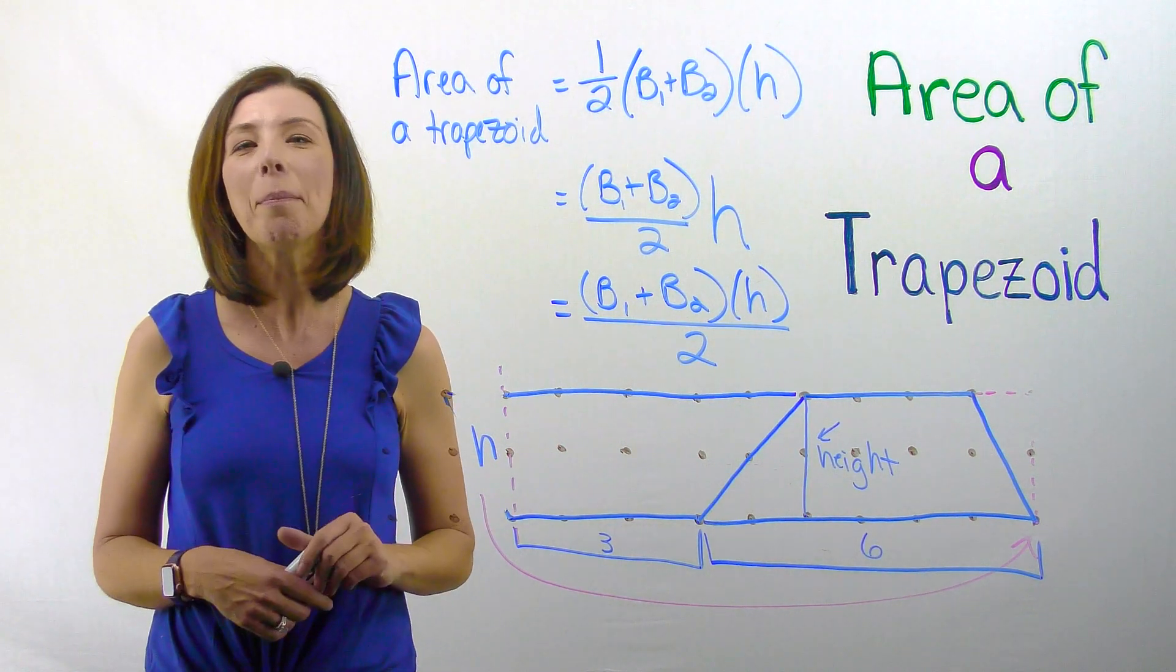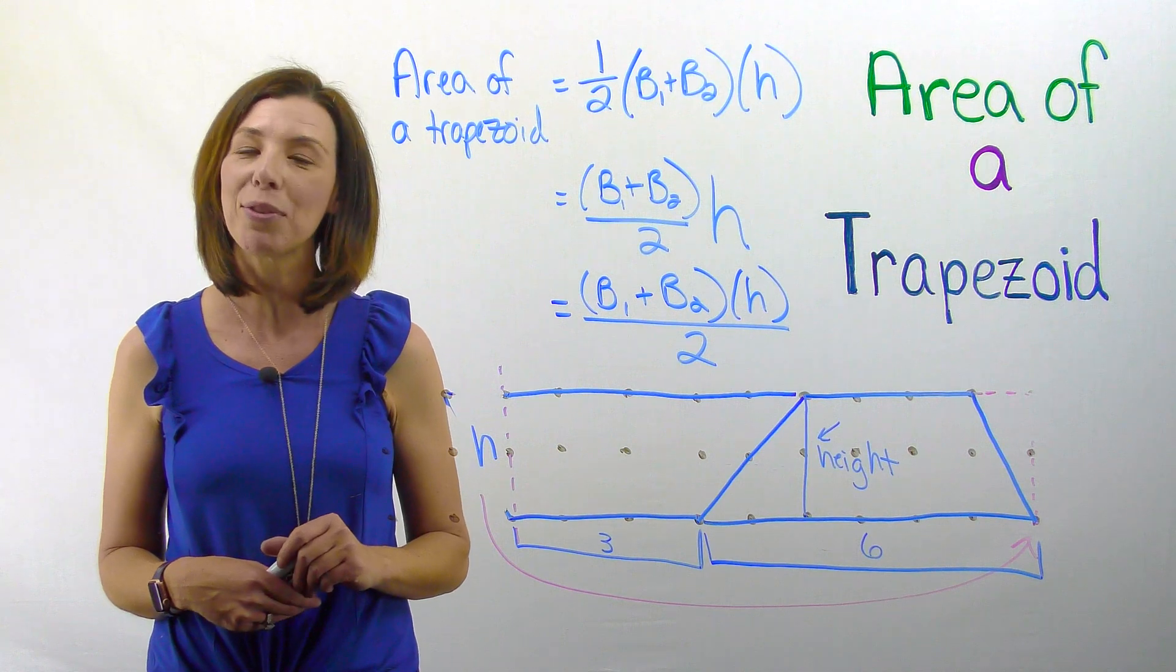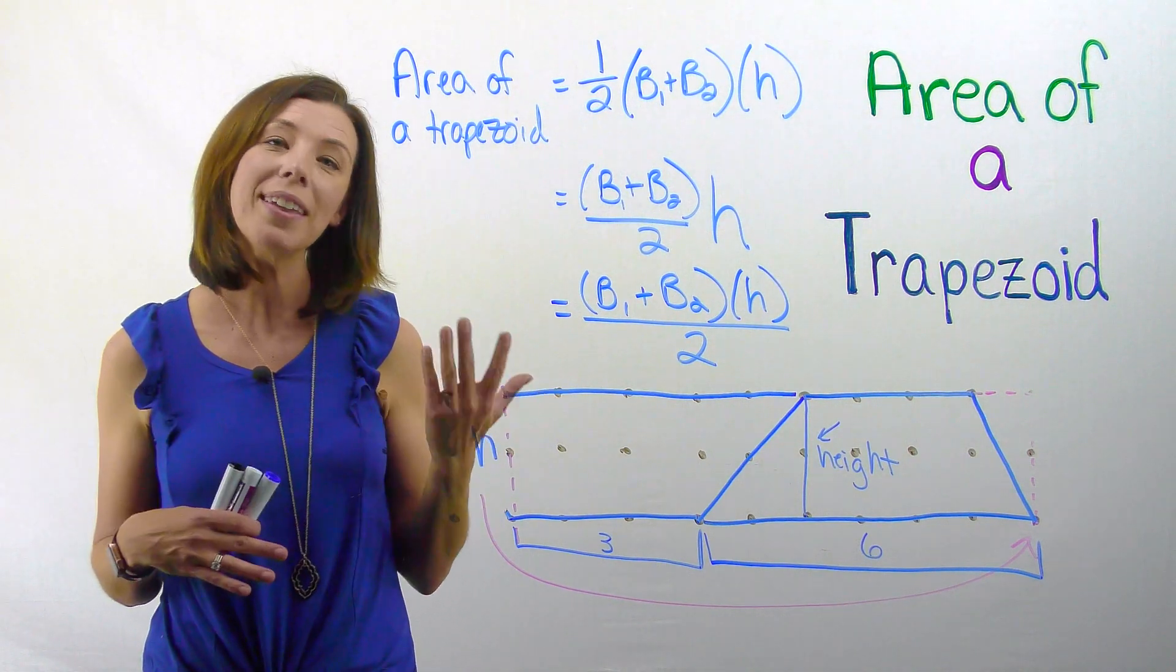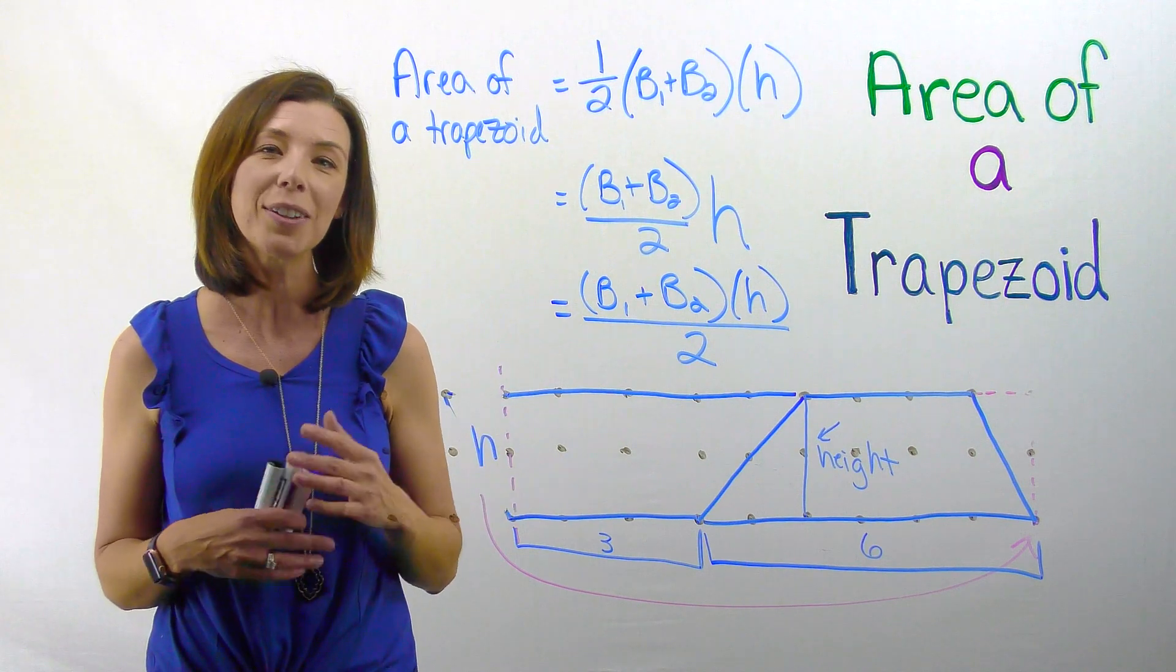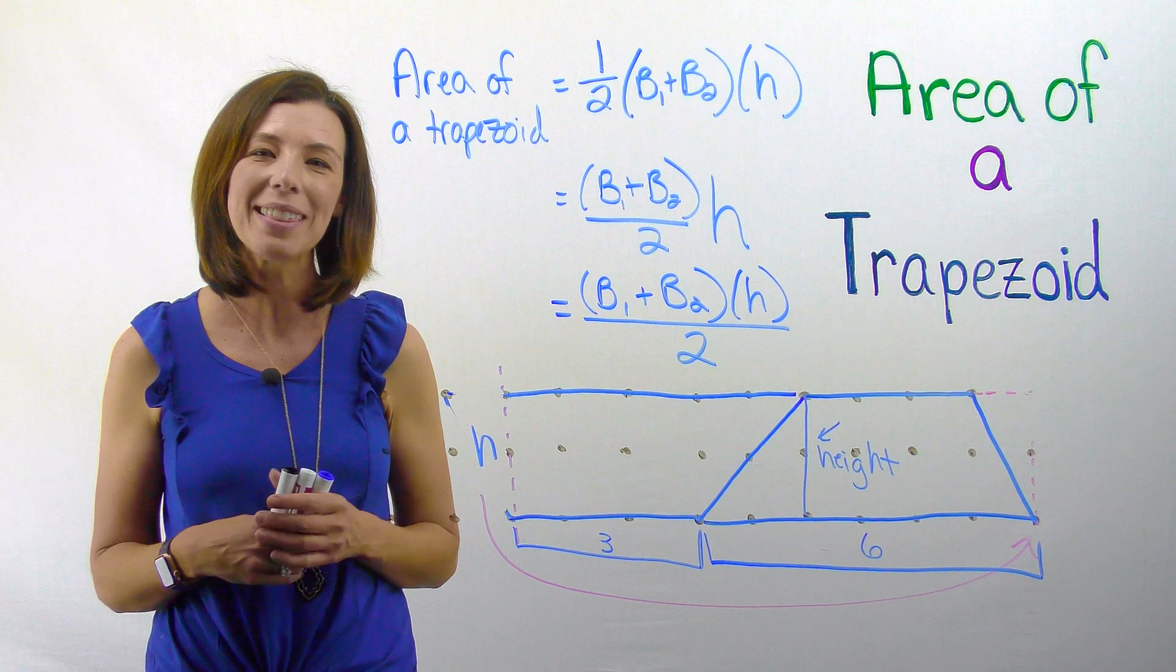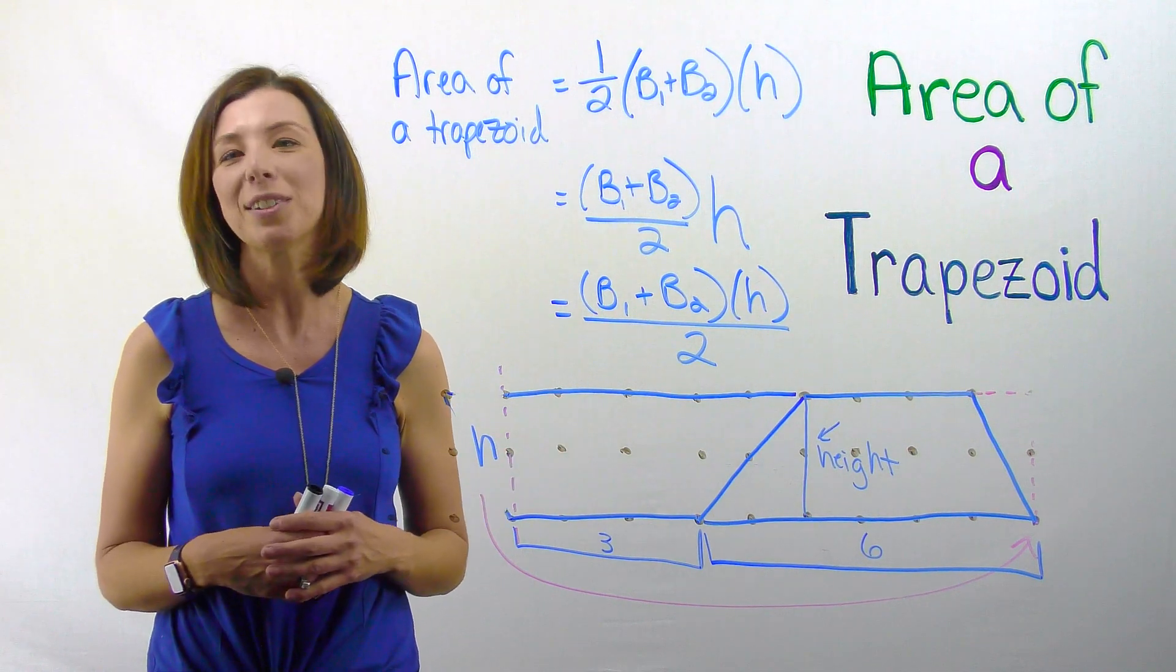I hope now you have a better understanding of how to derive the formula for an area of a trapezoid, and you can see how the area of a trapezoid, the area of a triangle, and the area of a parallelogram are all very tightly woven, and we just tweak them slightly in order to get our different formulas.